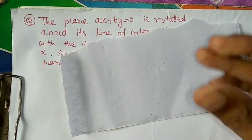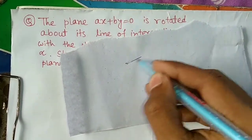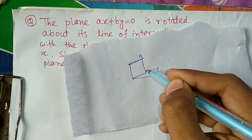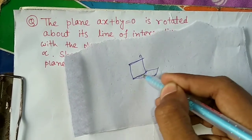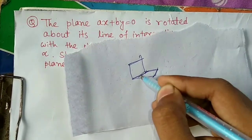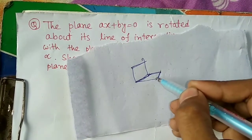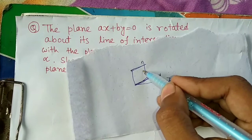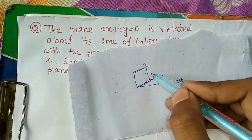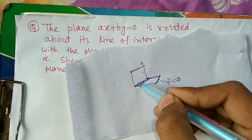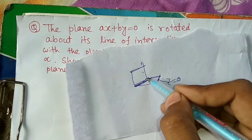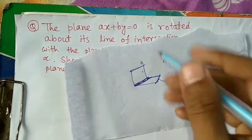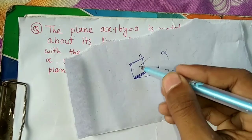Here we have two planes. Suppose this plane is z equals to 0 and this plane is x plus by equals to 0. This plane has rotated about its line of intersection — this line as the axis — and it has rotated by angle alpha. So this plane is rotated to this new position.